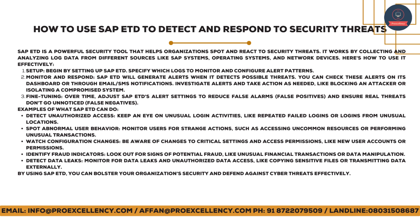Fine-tuning — over time, adjust SAP ETD's alert settings to reduce false positives and ensure real threats don't go unnoticed. Examples of what SAP ETD can do: Detect unauthorized access — monitor unusual login activities like repeated failed logins or logins from unusual locations. Spot abnormal user behavior — monitor users for strange actions such as accessing uncommon resources or unusual transactions. Watch configuration changes — be aware of changes to critical settings and access permissions. Identify fraud indicators — look out for signs of potential fraud like unusual financial transactions or data manipulation. Detect data leaks — monitor for unauthorized data access such as copying sensitive files or transmitting data externally.